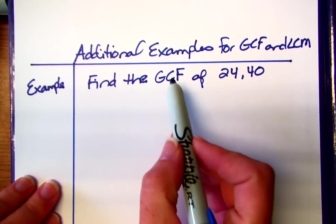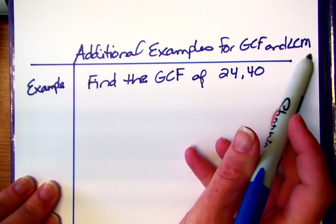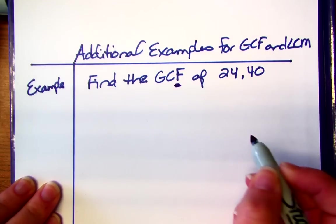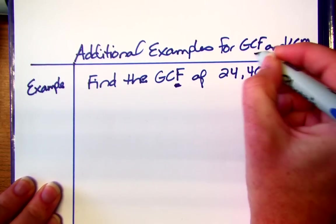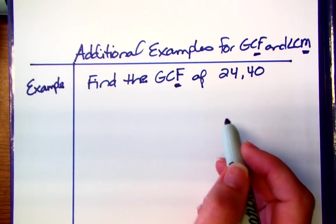All right, so here are some examples for the greatest common factor and the least common multiple. And again, make sure that we're identifying the factor and then the multiple. That's going to help you really understand what we're going to be doing.